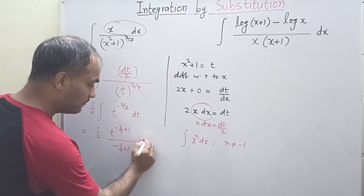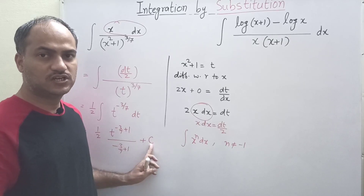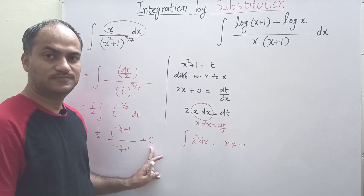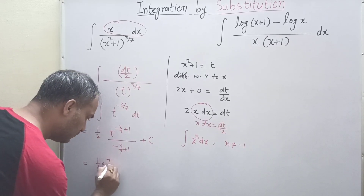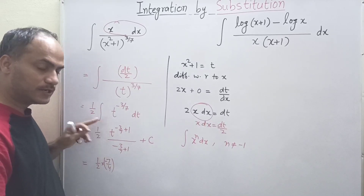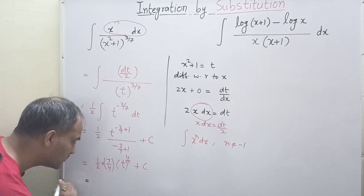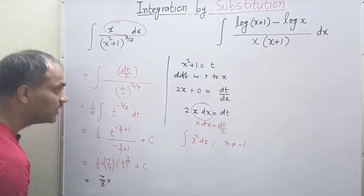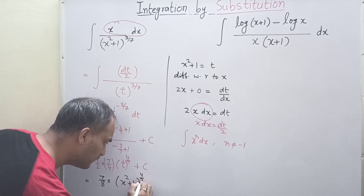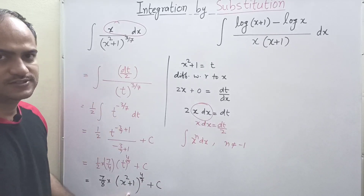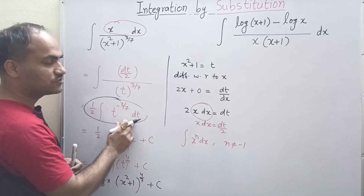Remember that whenever we do any integration, a constant of integration must be added — it can be C, C1, or C'. The exponent simplifies: minus 3/7 plus 1 equals 4/7, so t to the power 4/7, and dividing by 4/7 brings 7/4 to the numerator. This gives 7/8 · t to the power 4/7. Substituting back t = x squared plus 1, the final answer is (7/8)(x² + 1)^(4/7) + C. This is the beauty of substitution method.